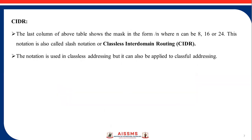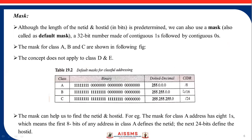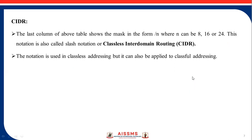The next concept is CIDR, which stands for Classless Interdomain Routing. The last column of the table shows the CIDR notation, expressed in the form /N, where N can be 8, 16, or 24. This notation is also called slash notation. Although this notation is used in classless addressing, it can also be applied to classful addressing.